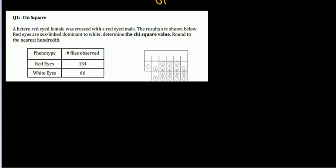A hetero red-eyed female was crossed with a red-eyed male. The results are shown below. The red eyes are sex-linked dominant to white. Determine the chi-square value rounded to the nearest hundredth.